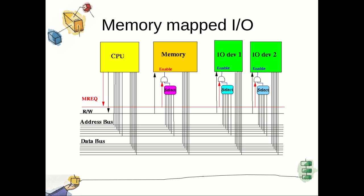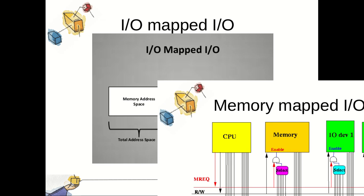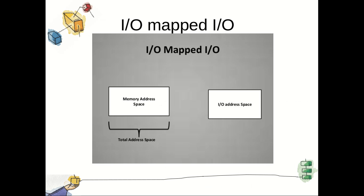The processor treats status and data registers as separate memory locations. Status and data registers are part of input and output devices. The processor uses the same memory instructions to access both memory and input/output devices. With memory mapped IO, only a single read line and a single write line are needed on the bus.